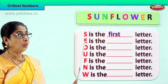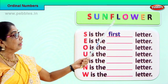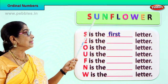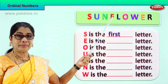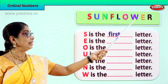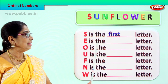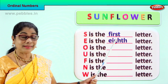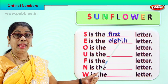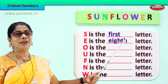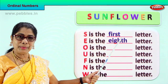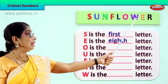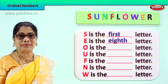What about E? We have letter E in sunflower. Where is E? Here is the E. Let's say which position: first, second, third, fourth, fifth, sixth, seventh, eighth. Letter E in sunflower is the eighth letter. Spell eighth: E-I-G-H-T-H. Eighth. So letter E is in the eighth position. Good.